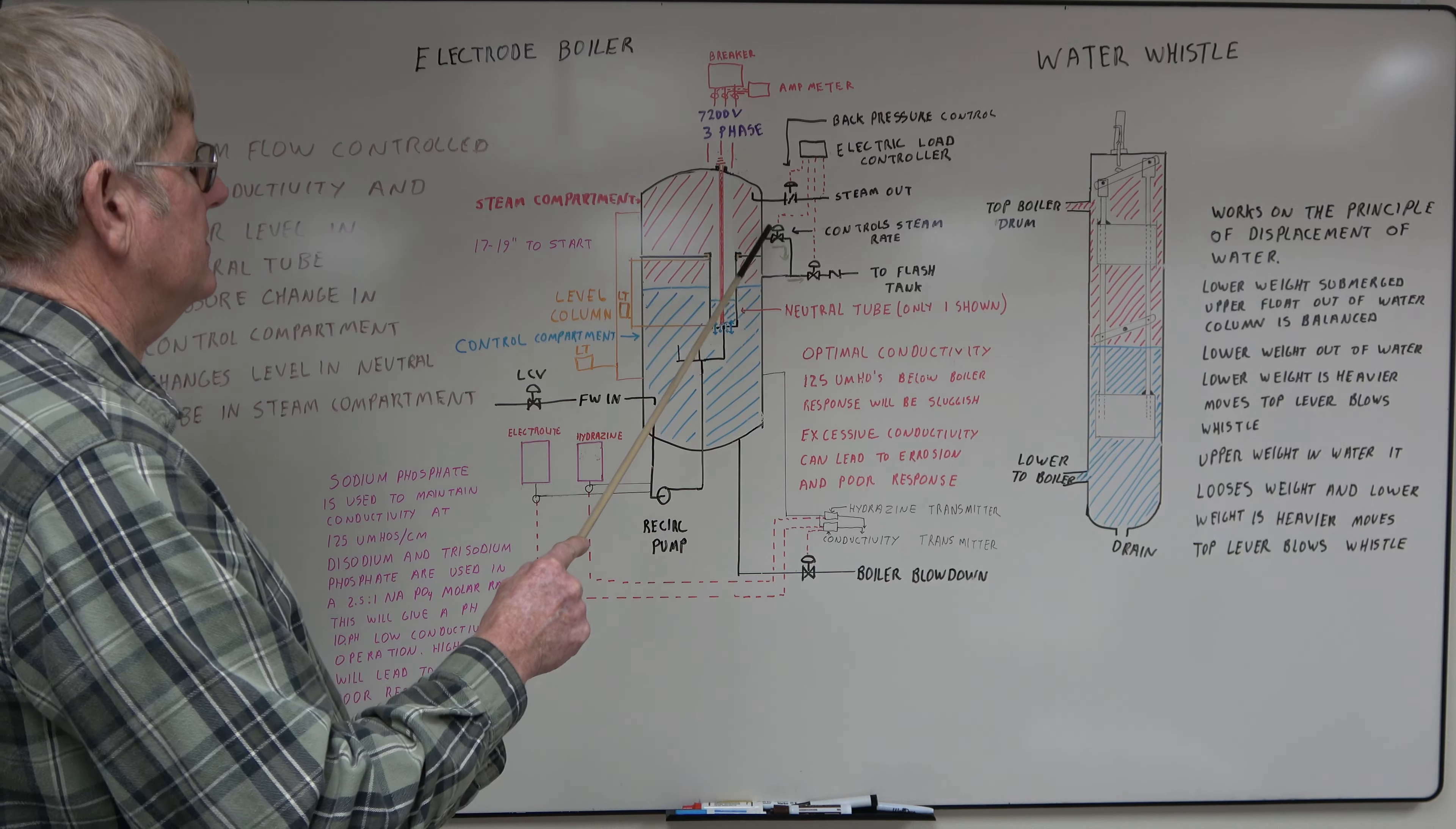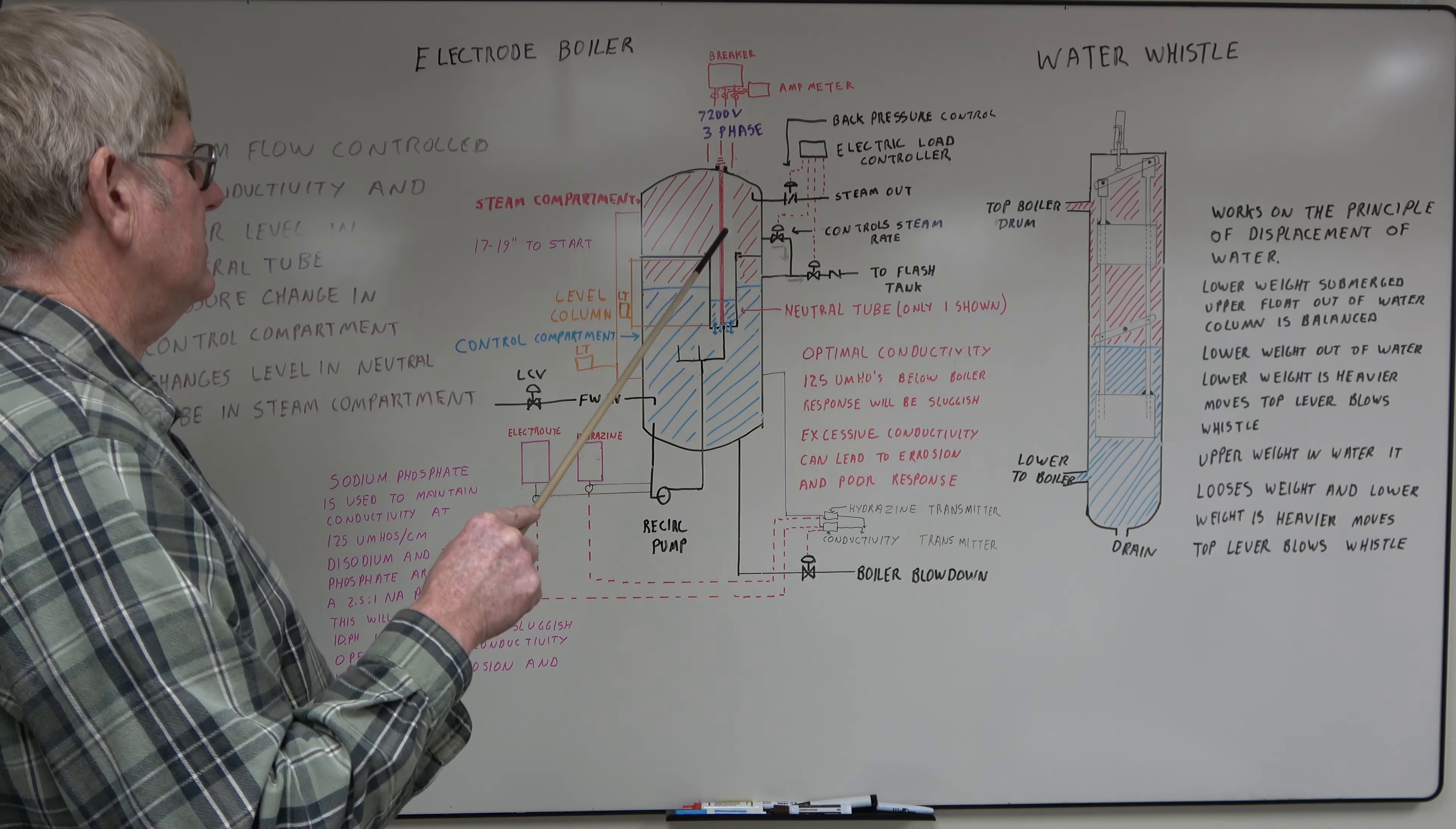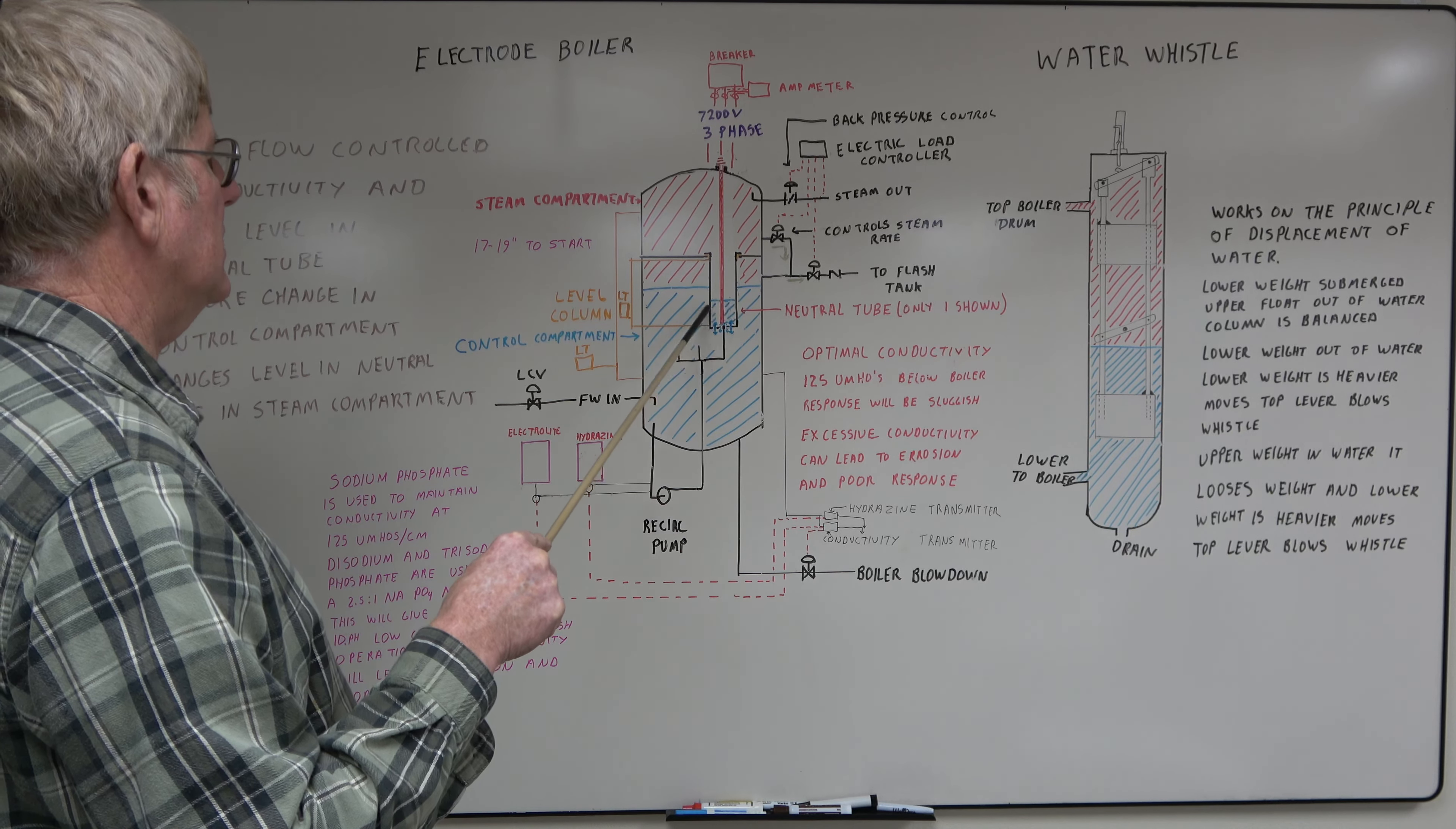If you have too much steam, this valve closes. You start venting steam to a flash tank. Water level in here will lower. Take the level out of the neutral tube and it'll drop your current flow.